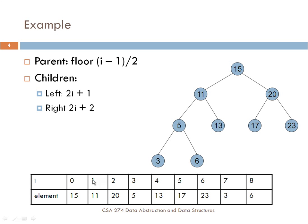And then the children are at 2i plus 1, so 2i is 2, plus 1 is 3. That's the left child, and then the right child is 2i plus 2, so it would be 2 plus 2, which is 4. The children are at locations 3 and 4, and so if you look at the tree, this is our node 11, at location 3 is 5, and at location 4 is 13. That's what we see here in this diagram.